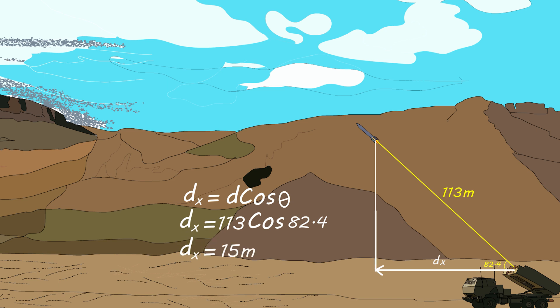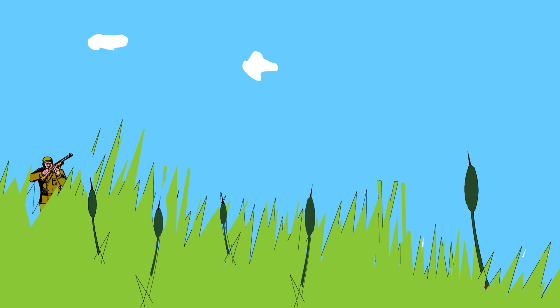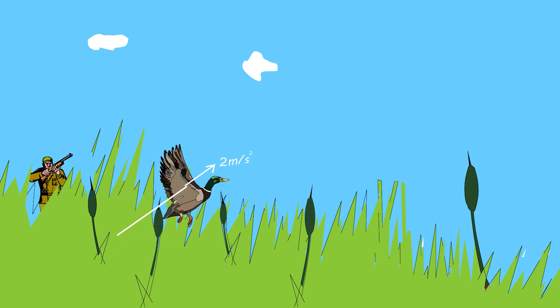To find the vertical component of the rocket, the height is the opposite leg for the angle. Using dy = d sine theta: dy = 113 sine 82.4 = 112 meters.